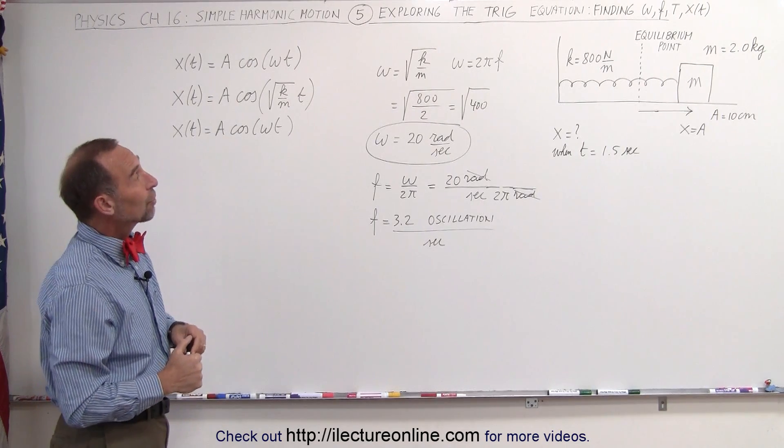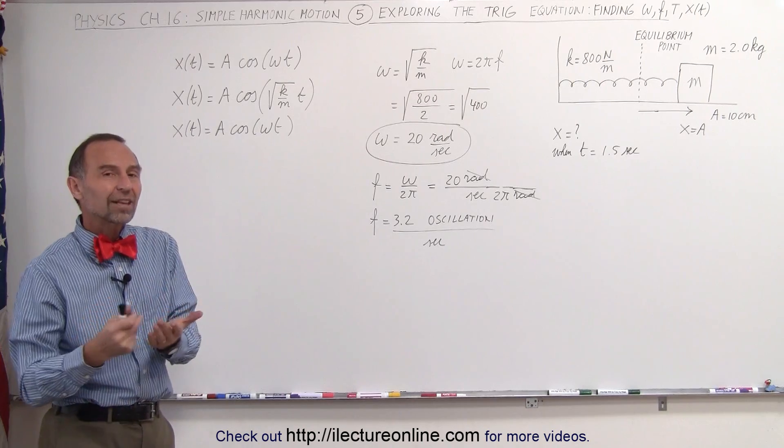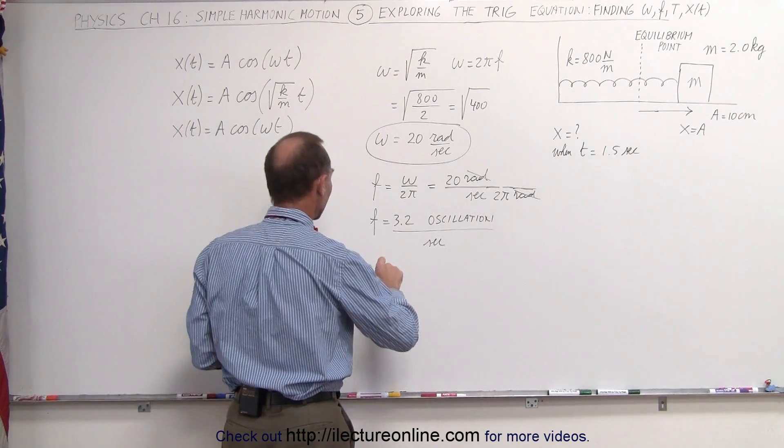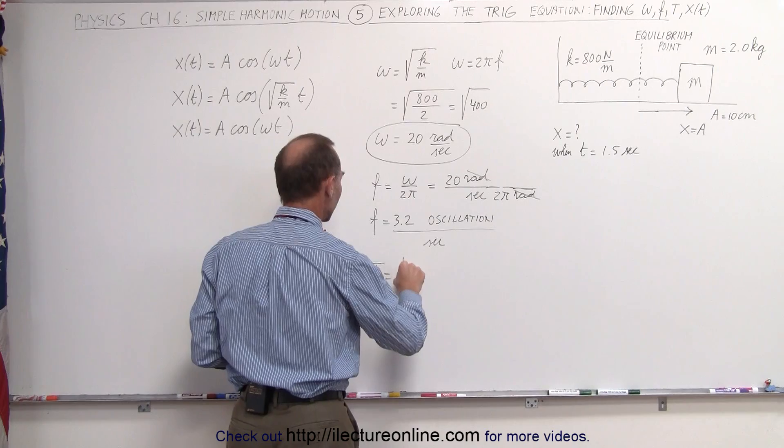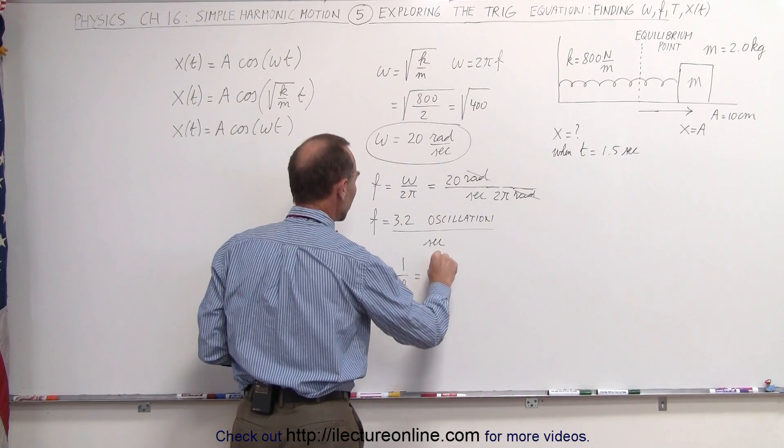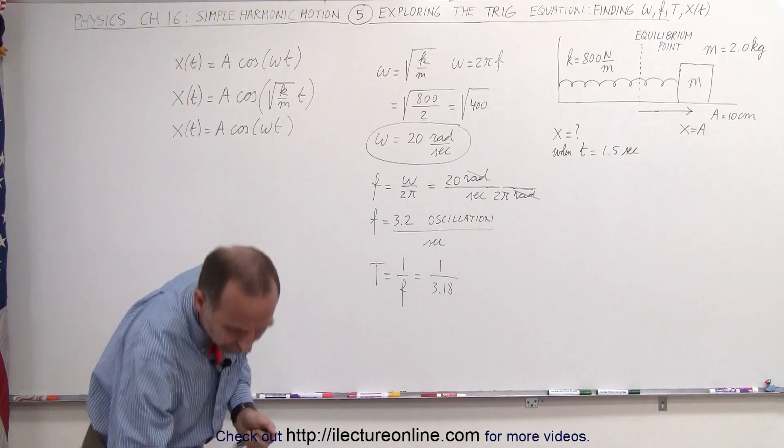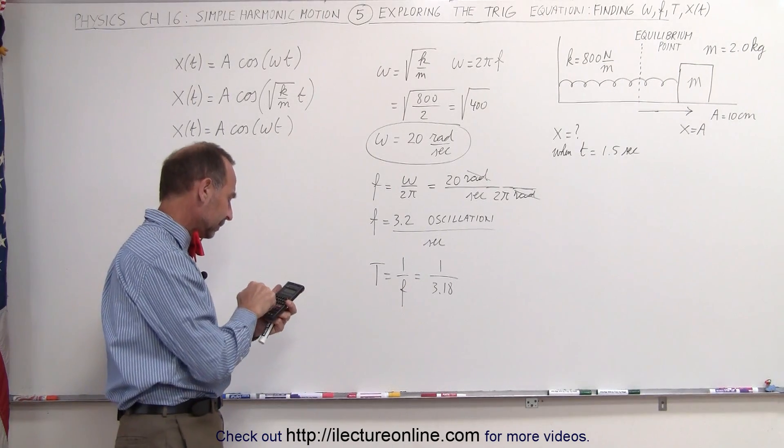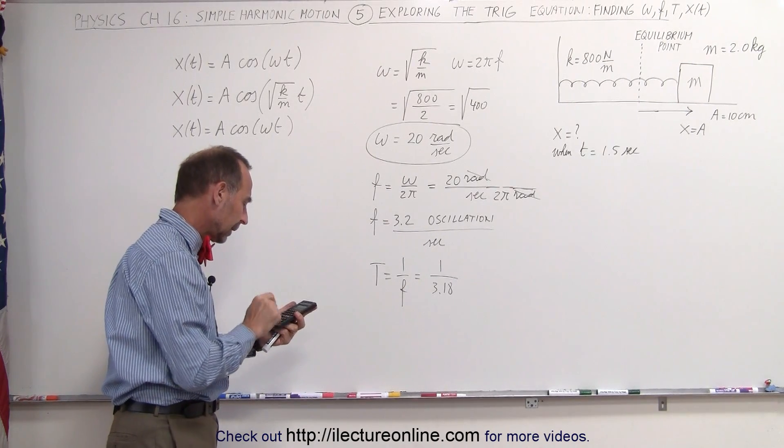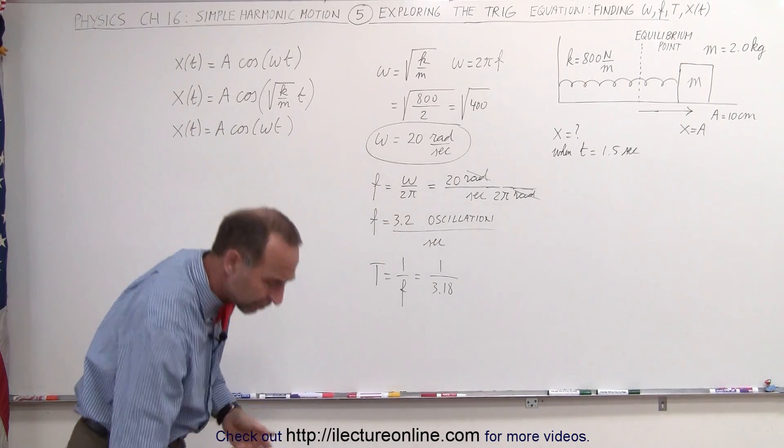The next thing we're going to find is the period. How long does it take for one oscillation to take place? We know that by definition, the period equals 1 divided by the frequency. That would be 1 divided by 3.18 if we keep three significant figures. So we take the inverse of that and we get 0.314.